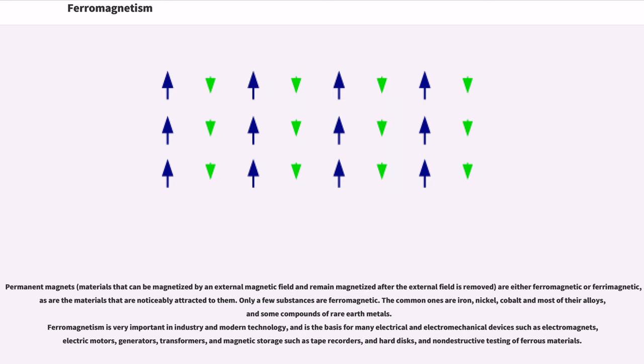Permanent magnets, materials that can be magnetized by an external magnetic field and remain magnetized after the external field is removed, are either ferromagnetic or ferrimagnetic, as are the materials that are noticeably attracted to them. Only a few substances are ferromagnetic. The common ones are iron, nickel, cobalt and most of their alloys, and some compounds of rare earth metals.